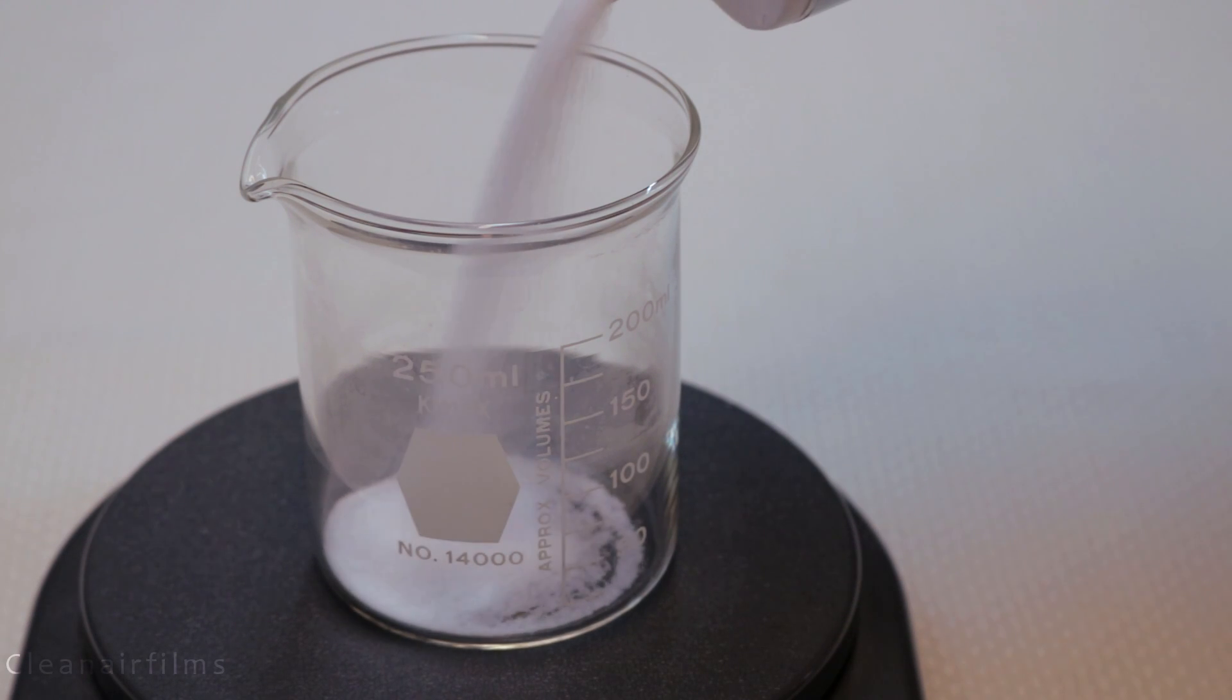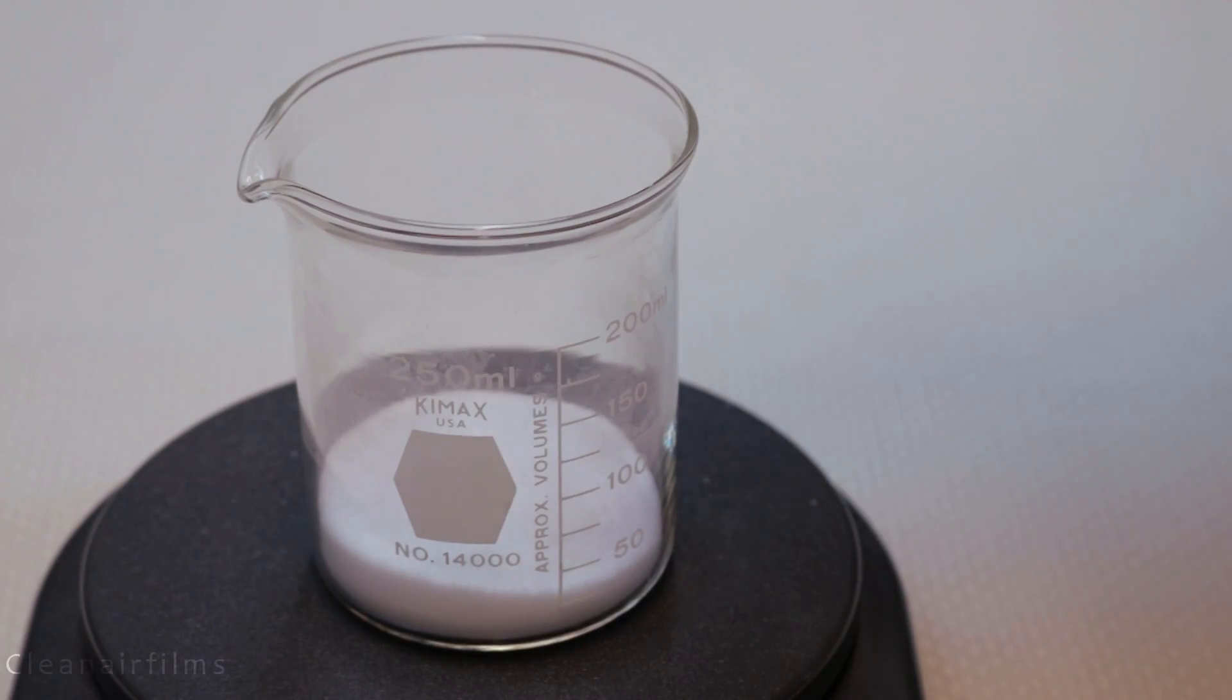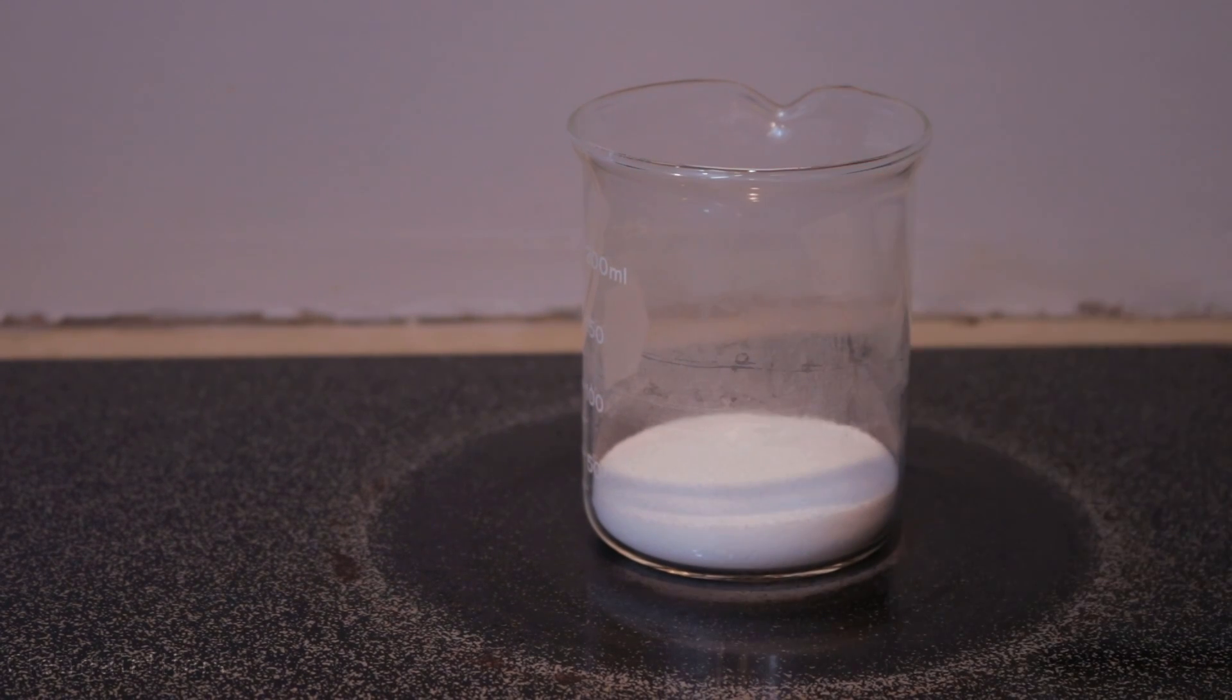First add 50 grams of salt to the beaker. Now measure out 50 milliliters of water into the graduated cylinder. Put the beaker on the stove and add the water.